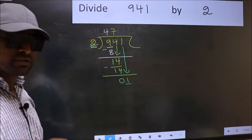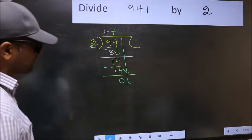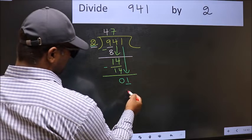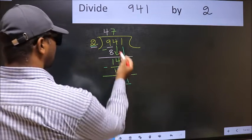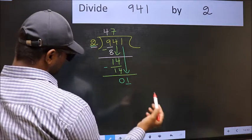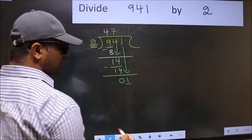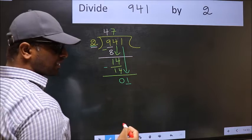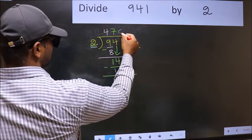Instead, what you should think of is, what number should we write here? If I take 1 here, I get 2. But 2 is larger than 1. So what we should do is, we should take 0.